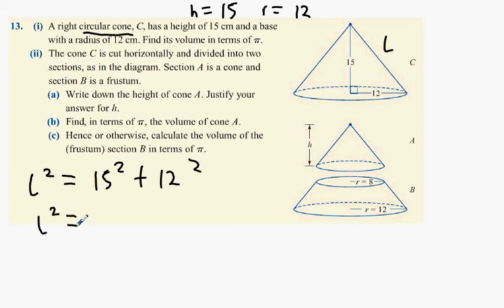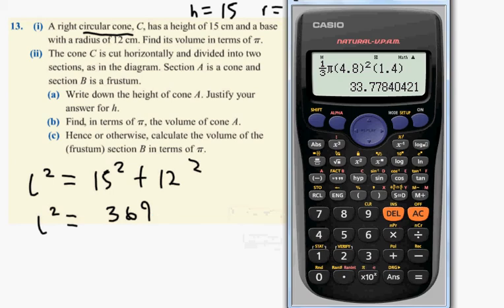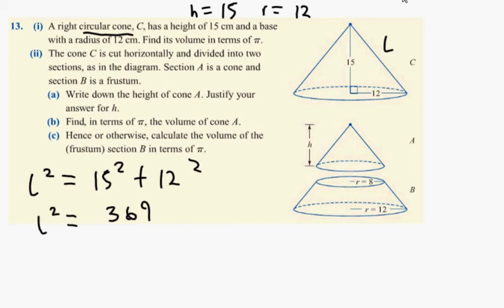The longest side is l, so l squared equals 15 squared plus 12 squared, giving l squared equals 369. We'll leave that as the square root of 369, approximately 19.2. We leave it as root 369 because the question asks us to leave the volume in terms of pi.